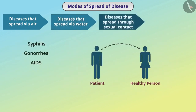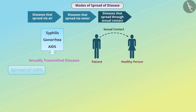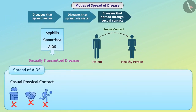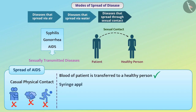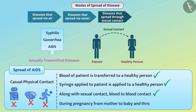Some diseases transfer from one partner to another through sexual contact. Such diseases are called sexually transmitted diseases. These diseases do not spread through casual physical contact. AIDS also spreads if the blood of an AIDS patient is transferred to a healthy person, or if a syringe used on an AIDS patient is applied to a healthy person. Therefore, along with sexual contact, AIDS also spreads through blood-to-blood contact, during pregnancy from mother to baby, and through breastfeeding.